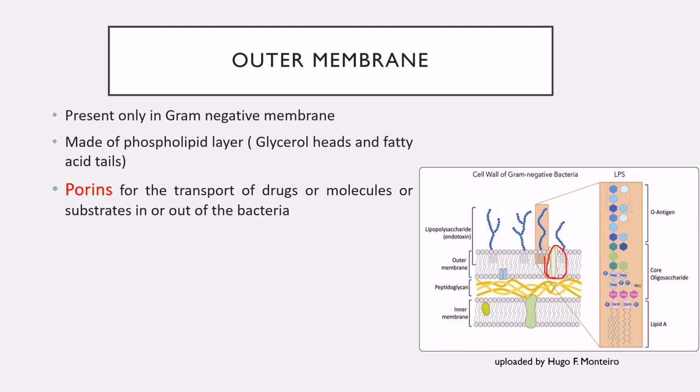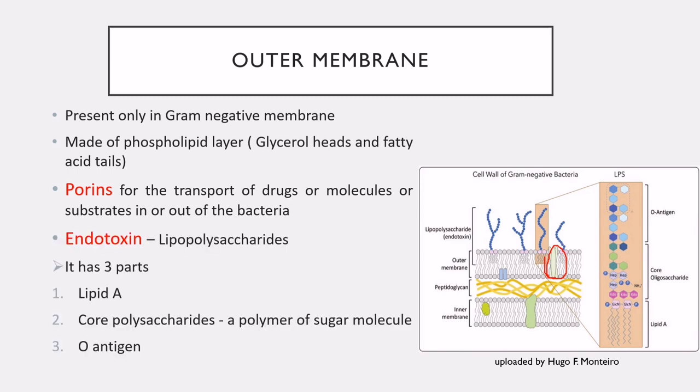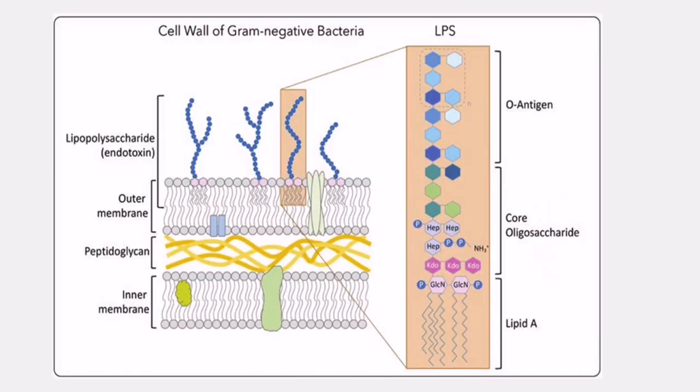Lipopolysaccharide or endotoxin present in the outer membrane has three parts: Lipid A, core polysaccharide, and O antigen — which is a polymer of sugar molecules. These three parts — O antigen, core oligosaccharide, and Lipid A — make up the LPS or endotoxin present in the outer membrane of gram negative bacteria.